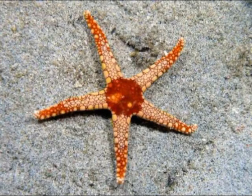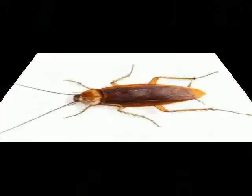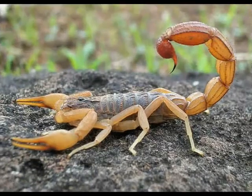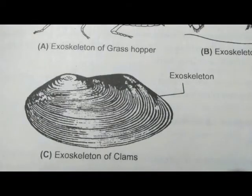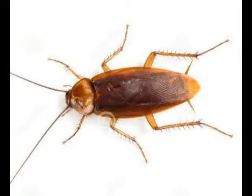The second type is Exoskeleton. Exo means outer side. An exoskeleton is an exterior skeleton. It is present in invertebrates. For example, Phylum Arthropoda and Phylum Mollusca. In Arthropoda, the exoskeleton is made up of chitin.